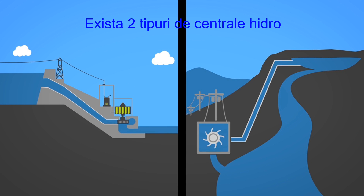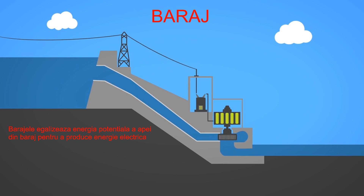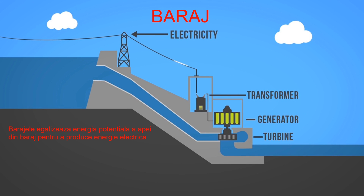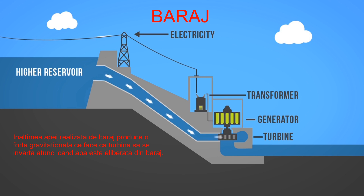There are two main types of hydroelectricity production: dams and run of river. Hydro dams utilize the potential energy from dammed water to produce electricity. A dam is a large barrier constructed to raise the level of water and control its flow. The elevation created by the dam creates gravitational force for turning the turbine when water is released.